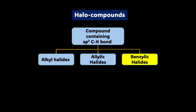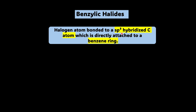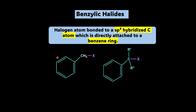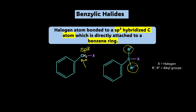Now let's move on to benzylic halides. These are halogens bonded to an SP3 hybridized carbon atom which is directly attached to the benzene ring. Here you can see a benzene ring — this SP3 hybridized carbon is attached to the ring through a sigma bond, with two hydrogens and one halogen, giving four sigma bonds — so yes, it is SP3 hybridized and this is a benzylic halide, with this carbon being the benzylic carbon. Even if you replace the hydrogens with one or two alkyl groups, it is still called a benzylic halide.